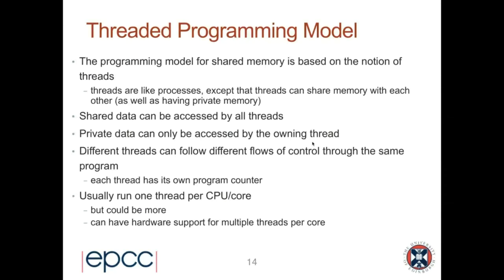The distinction between shared and private data is largely a software construct — the hardware underneath is the same. This software-level construct allows some data to be shared between threads and other data to be private to its owning thread. Different threads can follow different flows of control through the same program, executing different computations. Each thread has its own program counter — its own independent notion of which instruction to execute next — and they are independent of each other.